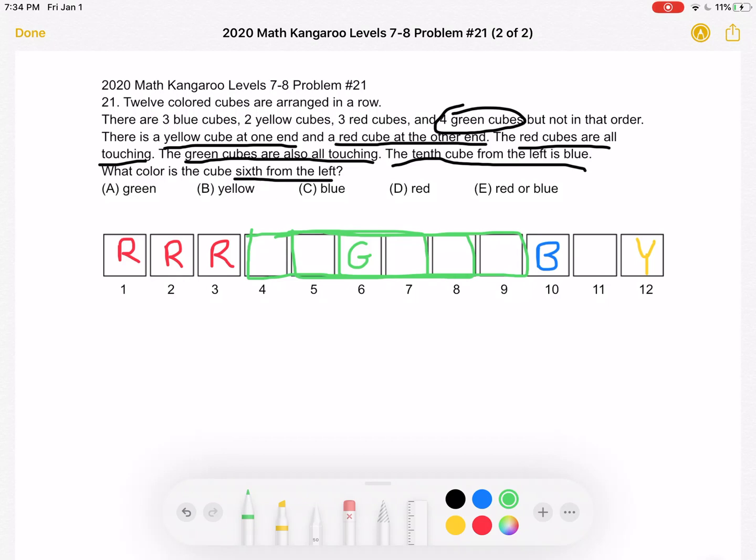So the answer to our problem is answer choice A. The cube sixth from the left must be green.